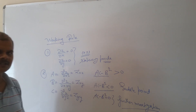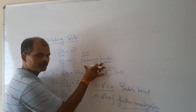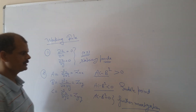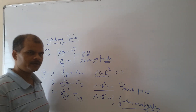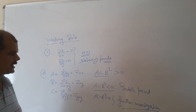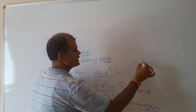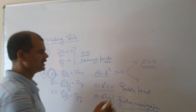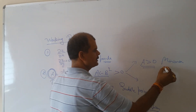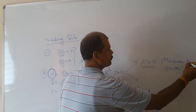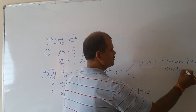So: AC minus B² less than 0 gives saddle points; AC minus B² equal to 0 gives no conclusion; and when it is positive, those points are extrema points. Now, among the extrema points, which is maxima and which is minima is decided based on the sign of A. If A is positive at that stationary point, that is your minima point, and the corresponding value of z will be the minima value.